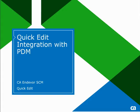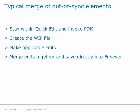We have also integrated Quick Edit with our Parallel Development Manager, making concurrent development easier for our customers. Now you can stay right within Quick Edit the whole time and invoke PDM from there — create your WIP files, make the applicable edits, then merge those edits together and save the element directly back into Endeavor without leaving Quick Edit. Before, you used to have to leave Quick Edit, go to PDM, pull all your elements, save your WIP file inside of a PDS, merge it, and then add it back into Endeavor. By integrating PDM and Quick Edit we have eliminated many of those steps.